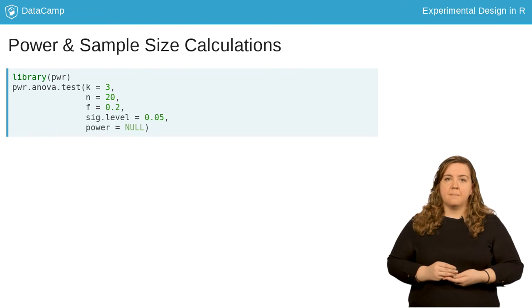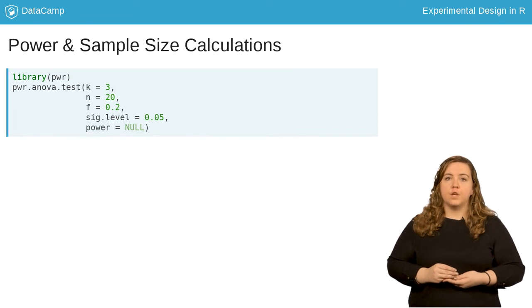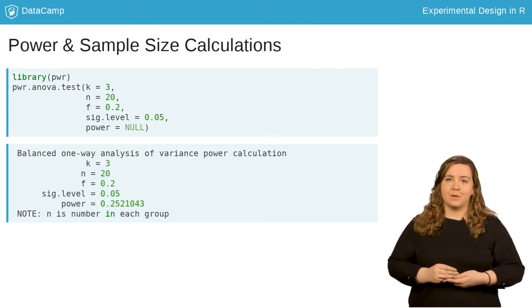So to calculate power for a test with three groups, 20 people per group, with an effect size of 0.2, and a significance level of 0.05, you would enter this code. Calculating it returns a power of 0.25. Not great. We probably can't detect that small of an effect size with so few people in each group.